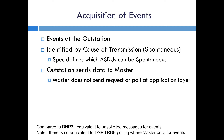Note that although spontaneous transmissions and DNP3 unsolicited responses are similar, there are a few differences. In particular, with DNP3 the master can suppress unsolicited responses — it can send a command telling the outstation to stop sending them. You cannot do that in IEC 60870-5. There is no disable for a spontaneous message. The outstation can choose to send them or not, but the master cannot tell the outstation to stop sending them.